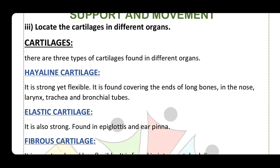Number one is hyaline cartilage, which is strong and flexible. It covers long bones and is present in the nose, larynx, trachea, and bronchial tubes.